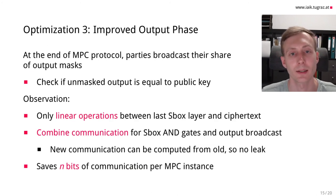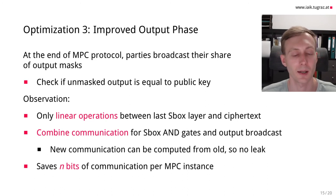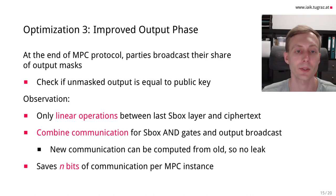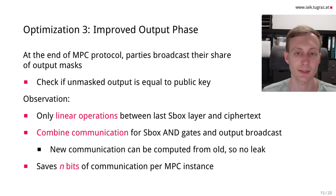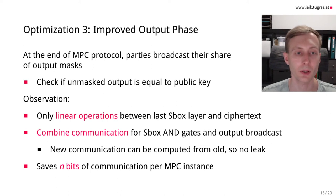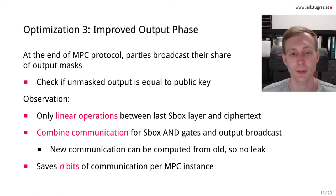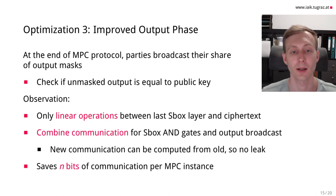The third optimization concerns the end of the MPC protocol, where parties must broadcast their share of the output to check that the unmasked output equals the public key given for Picnic. Our observation is that there are only linear operations between the last S-box layer of LowMC and the final ciphertext. We can therefore combine the communication for the S-box AND gates in the last S-box layer and the output into a single communication. This new communication can be computed from the previous old communication, so no additional information is leaked. This optimization saves N bits of communication per MPC instance, where N is the block size, resulting in a lower signature size.